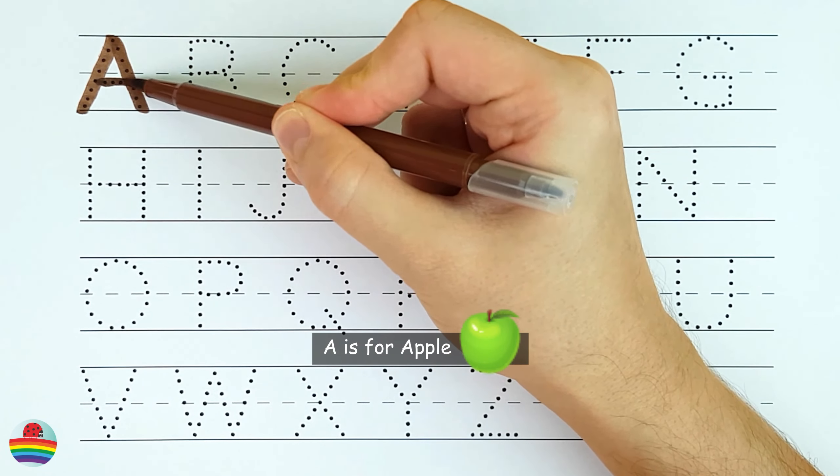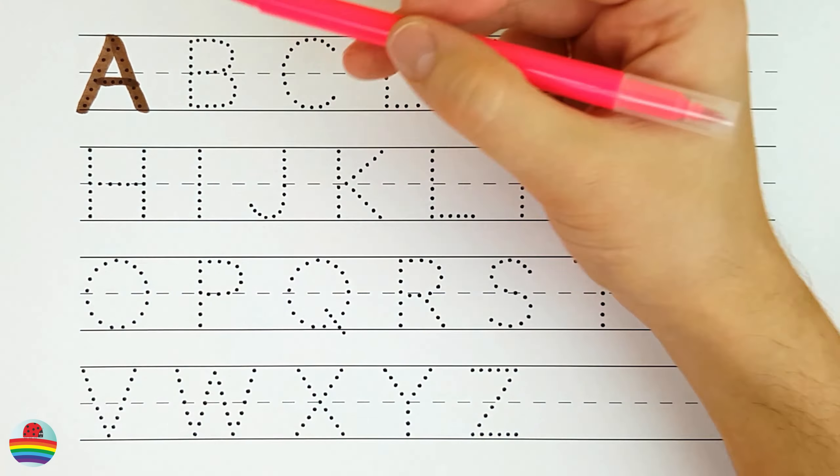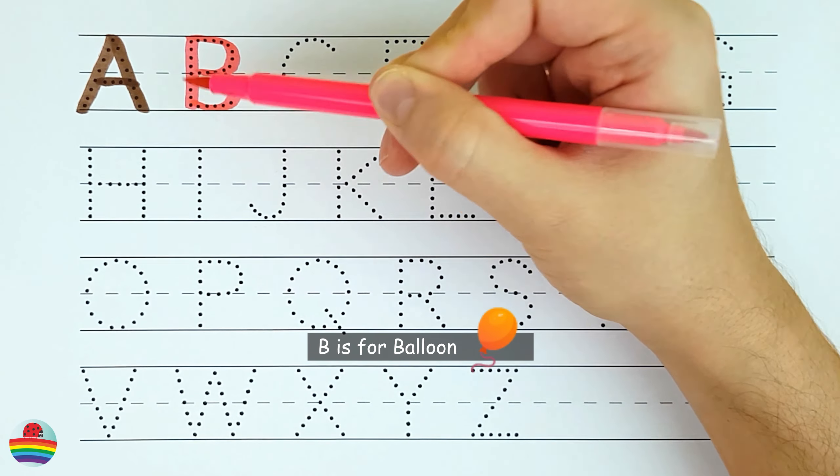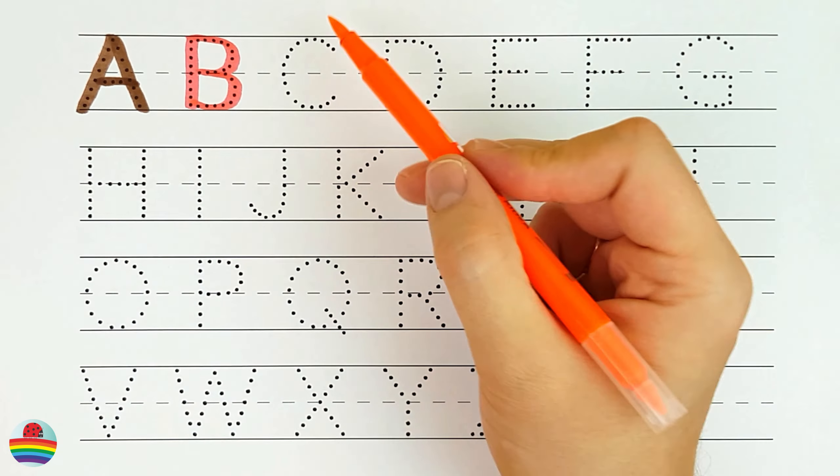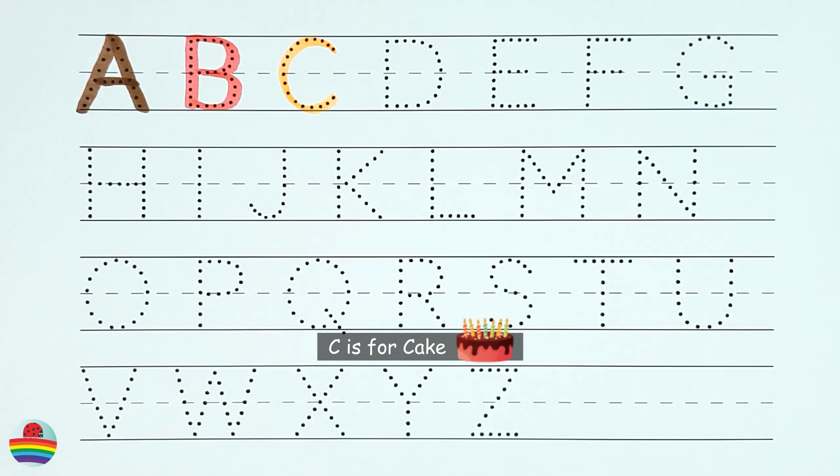A. A is for apple. B. B is for balloon. C. C is for cake.